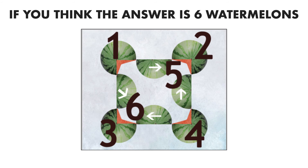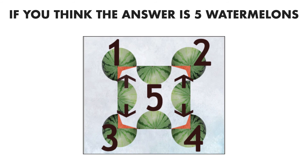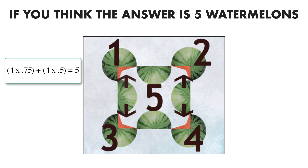If you think the answer is 5 watermelons, another possible solution is to fit the available pieces into a mathematical equation. In this case, we have 4 three-quarter melons plus 4 half melons, which could be represented mathematically as 4 times 0.75 plus 4 times 0.5, which is equal to 5.